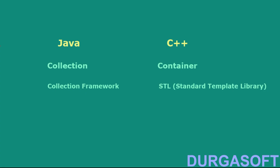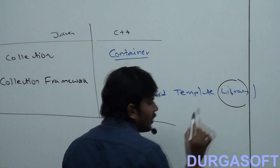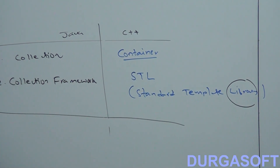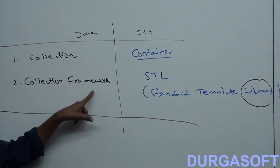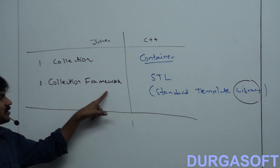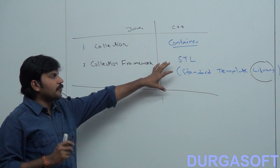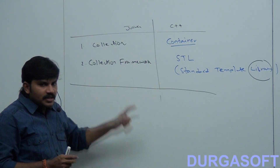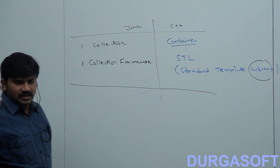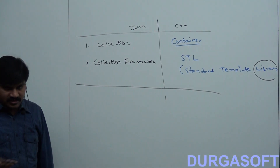What is a library? Library means a group. So collection framework means a group of classes and interfaces which can be used to represent a group of individual objects as a single entity. The required classes and interfaces are available in the collection framework. So that is the summary of what is collection, what is collection framework, and their equivalent terminology in C++.